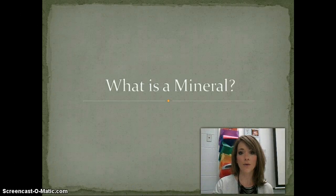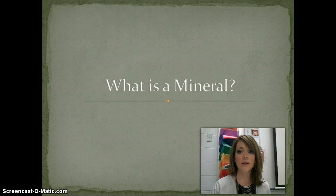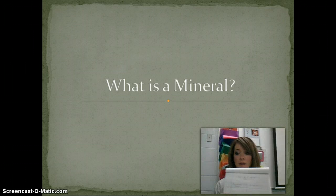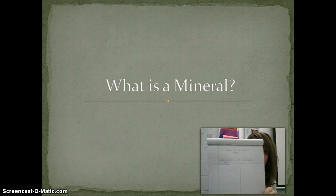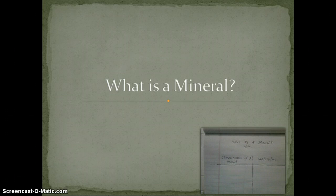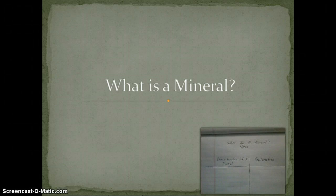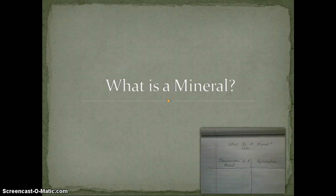Today we're going to be talking about what a mineral is. The first thing you're going to need to do is set up your notes. On a piece of notebook paper in your science binder, you're going to make a chart. At the top it says 'What is a mineral - notes.' You're going to make a T-chart. On the left-hand side, put 'characteristics of a mineral,' and on the right-hand side, put your explanation and notes about that particular characteristic.